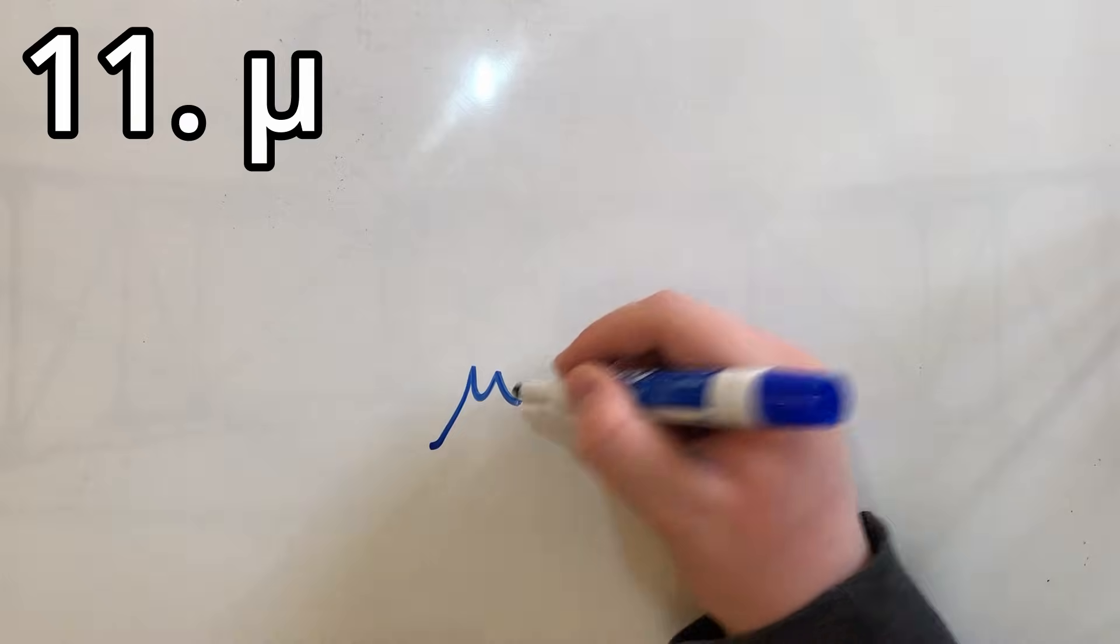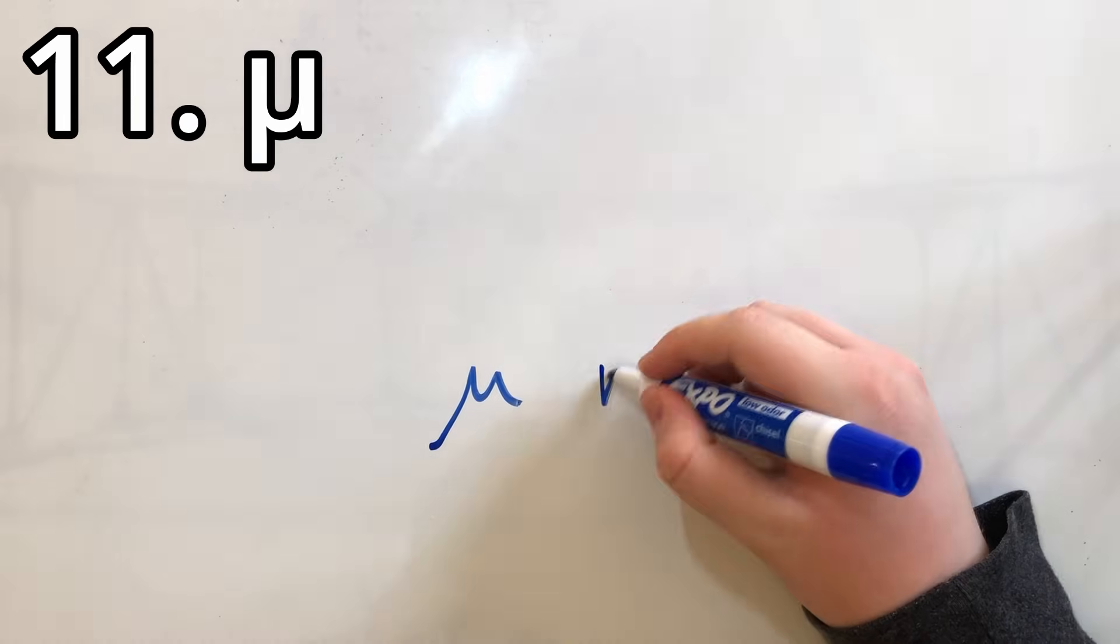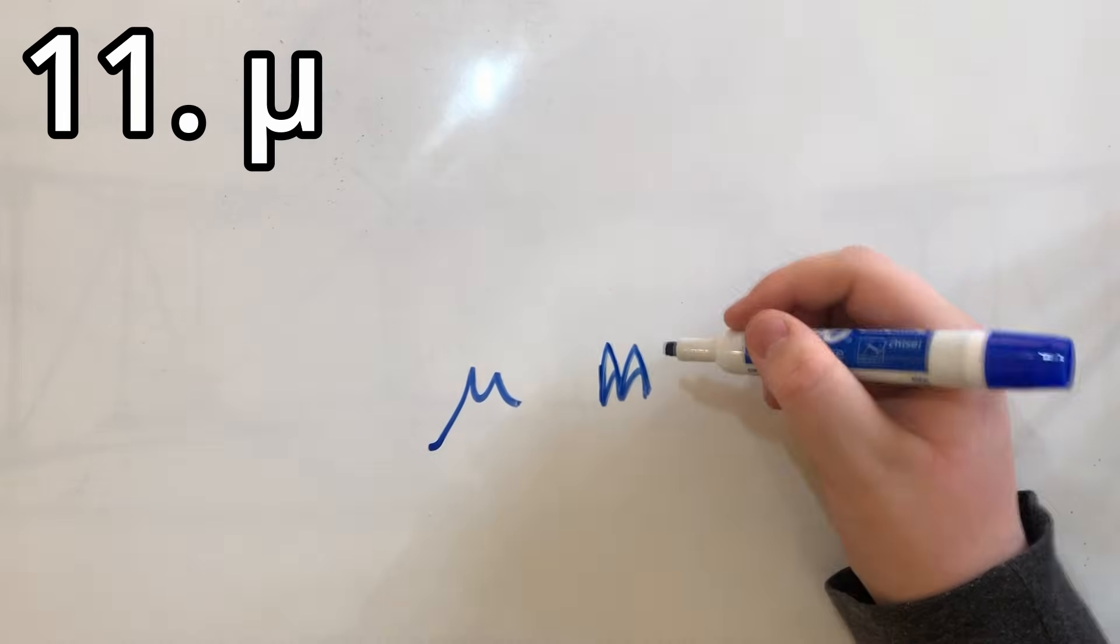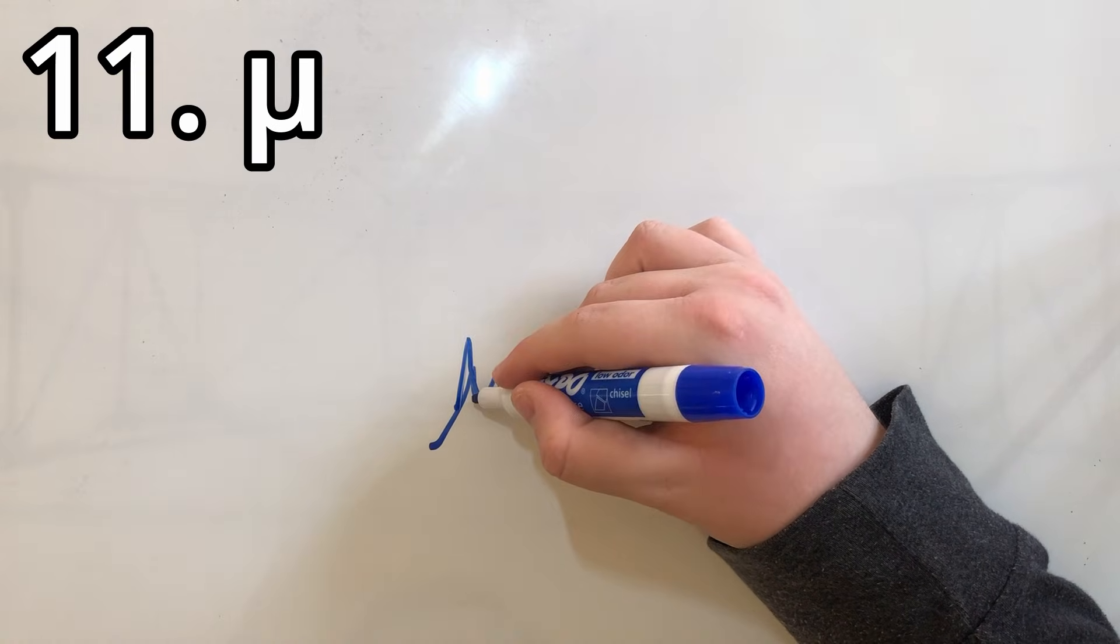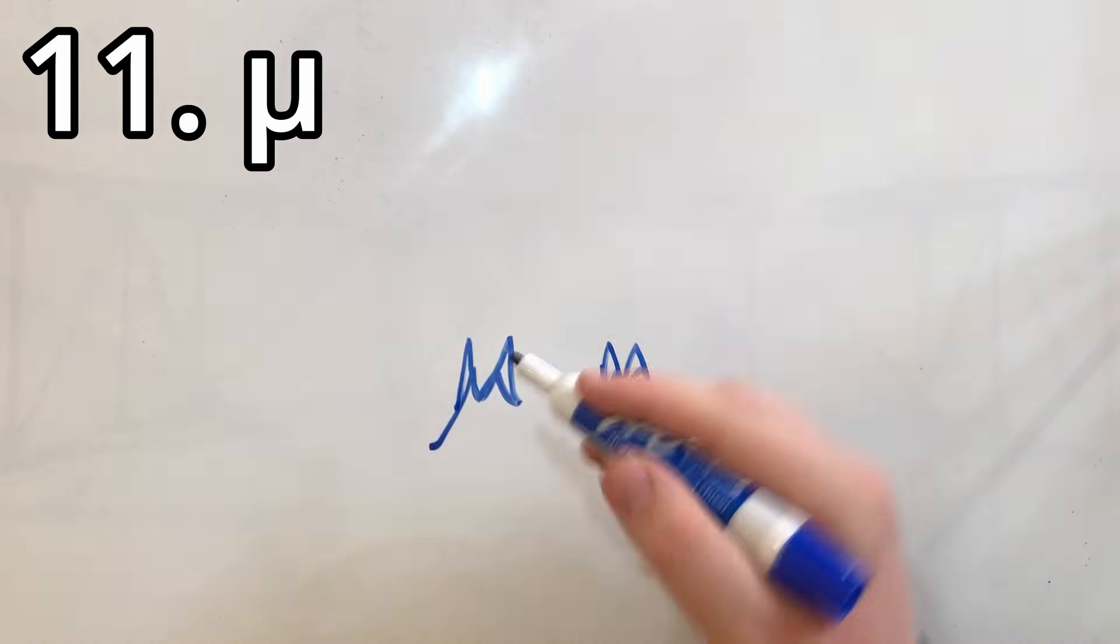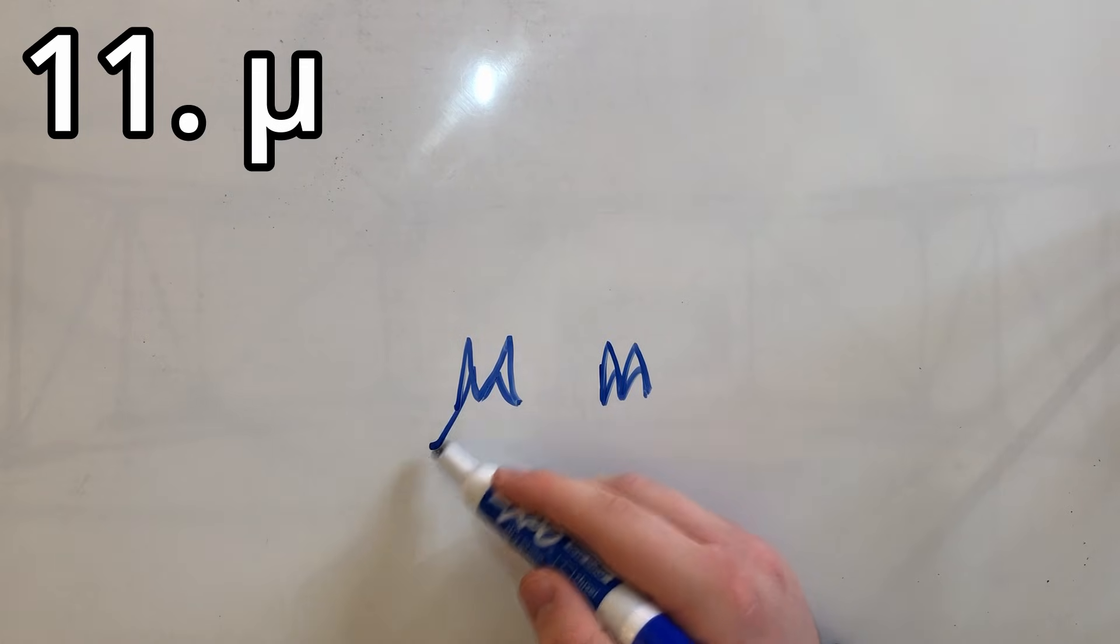Spot eleven goes to Mu, which in a way is similar to M from English. You got these spaces here. With Mu, it's harder to make it work, and you also got this little tail thing.